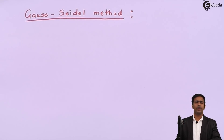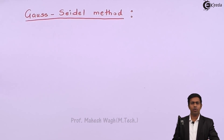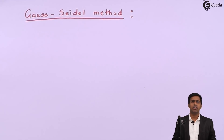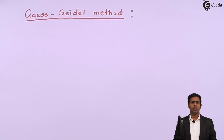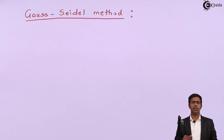In this video we are going to learn a new concept called the Gauss-Seidel method. Whenever we have simultaneous linear equations and want to find the roots or values of unknowns, we solve them by many methods — such as Cramer's rule, Gauss elimination, Gauss-Jordan method, and Jacobi's method. Gauss-Seidel is one of them and can be used to find the roots of simultaneous linear equations.